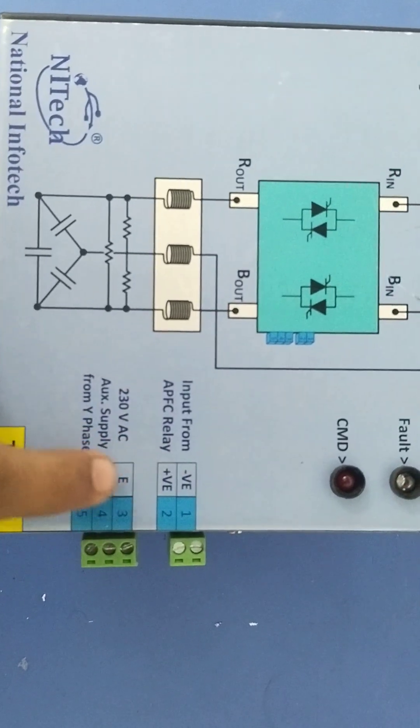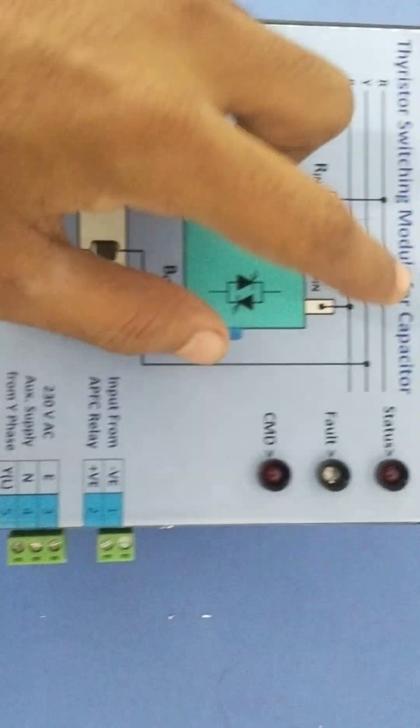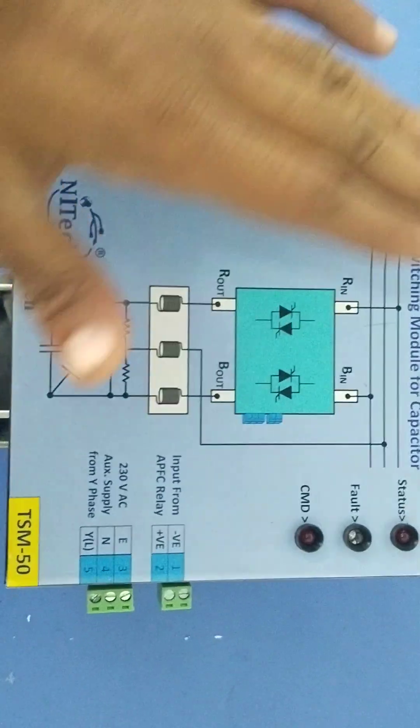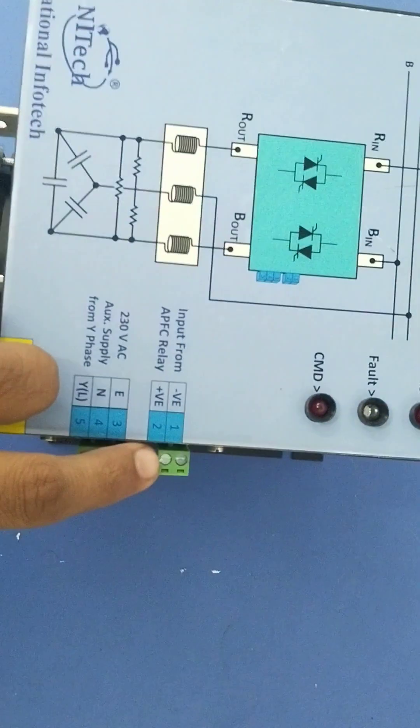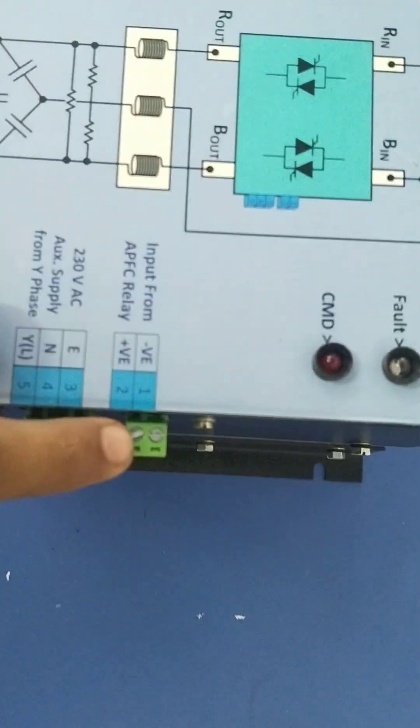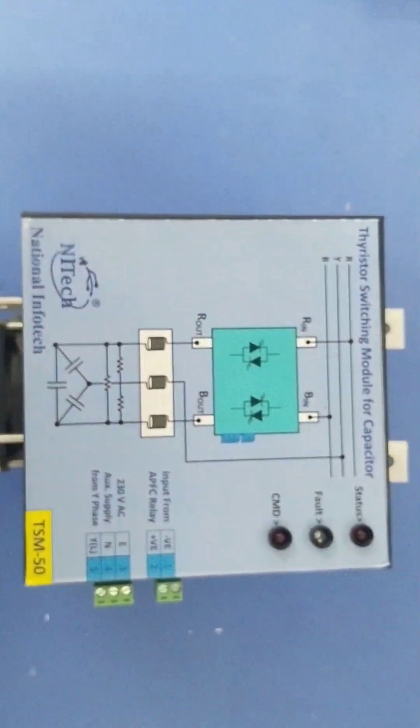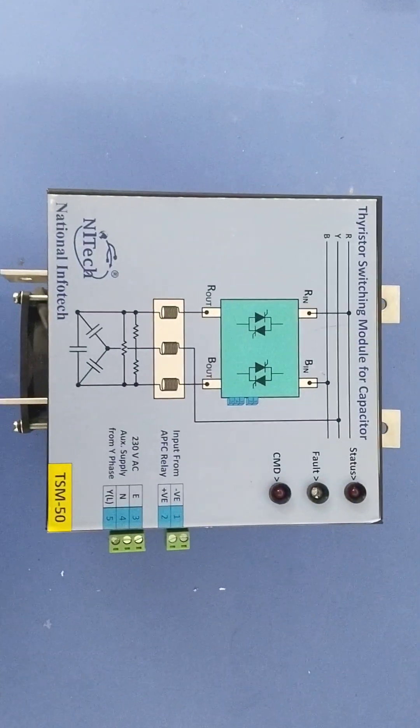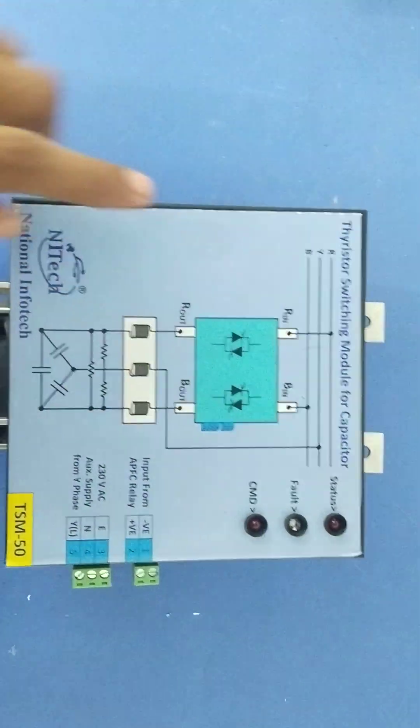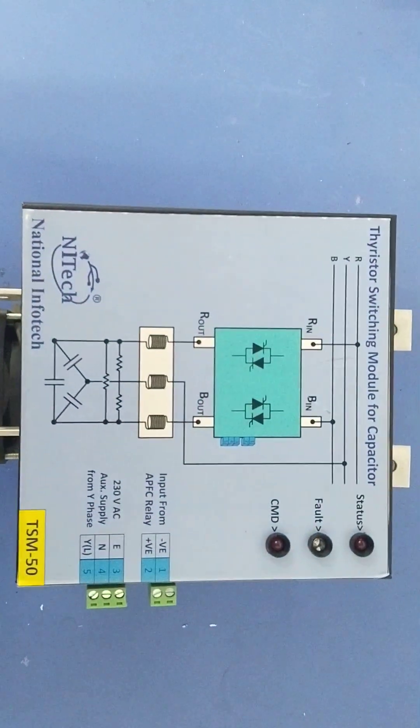For turning on and turning off, the command from the APFC relay should be given between terminal 1 and 2. So this is the connection method for using thyristor switching module for capacitor manufactured by National Infotech.